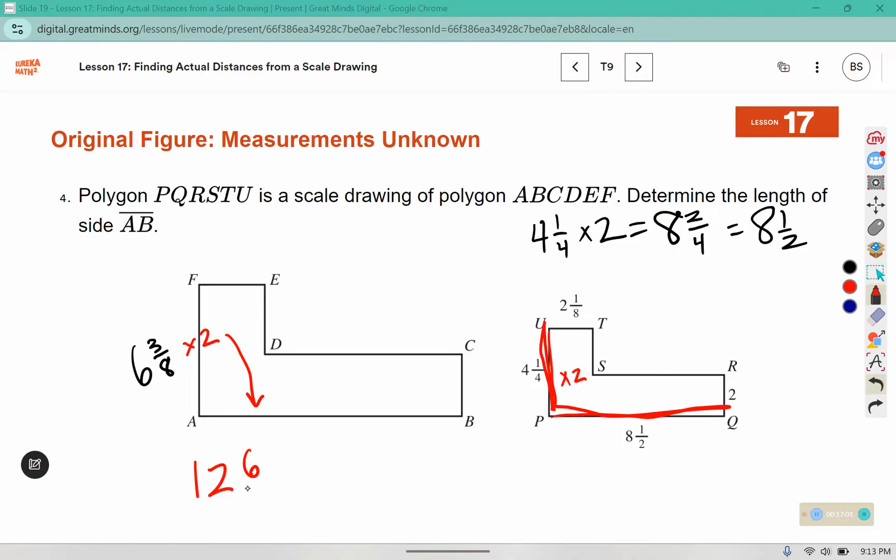3 times 2 is 6, so I have 12 and 6 eighths. 6 and 8 both have a 2 in common. It takes 3 twos to make 6 and 4 twos to make 8. So this is 12 and 3 quarters of a unit long for side AB.